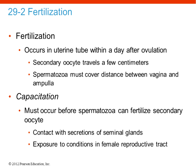Fertilization occurs in the uterine tube basically within that 12 to 24 hour window after ovulation. The secondary oocyte does not travel very far — once it's released from the ovary it's still in the early components of the uterine tubes, and the spermatozoa must cover a much further distance. Capacitation of course must occur to the spermatozoa before it has the capability of fertilizing the secondary oocyte. The secretions from the seminal glands and the conditions in the female reproductive tract allow for capacitation. If capacitation does not occur, fertilization is not possible.